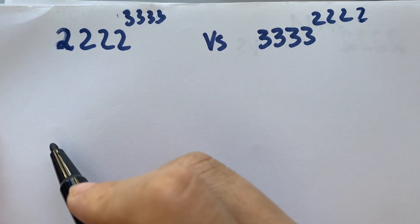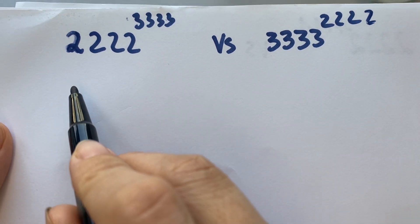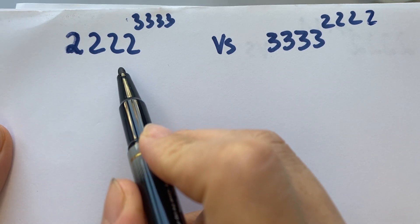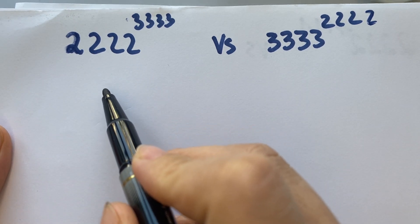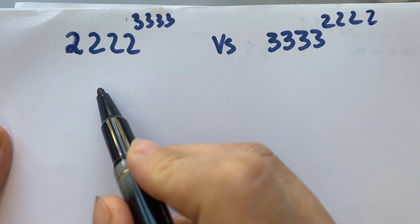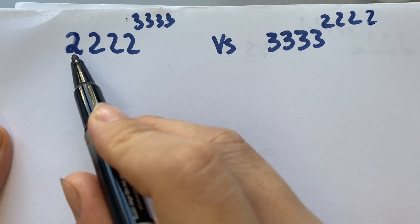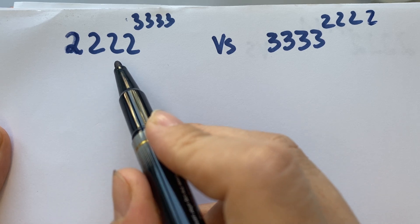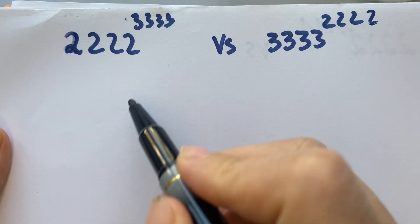Firstly, you need to break down: 2222 is equal to 2 times 1111.